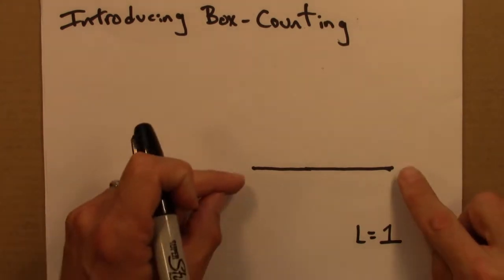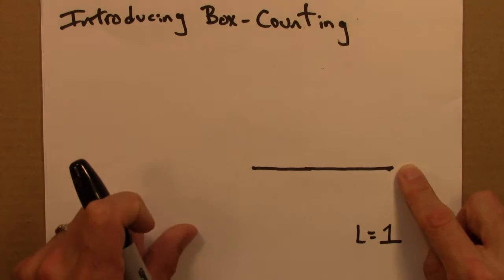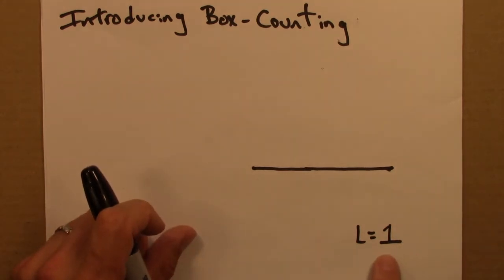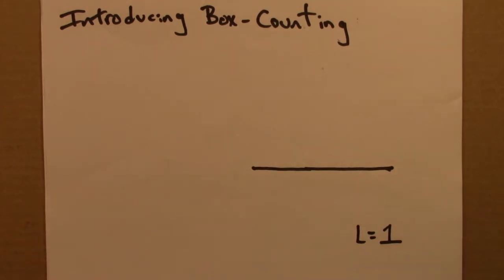So the first example I'll do is a line, a line segment. And let's say, for simplicity, that the length of this line segment is 1. And we'll do other lengths later.